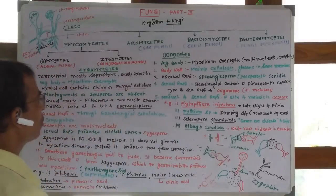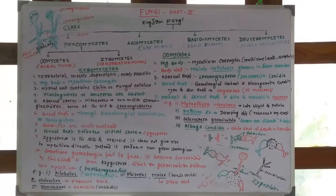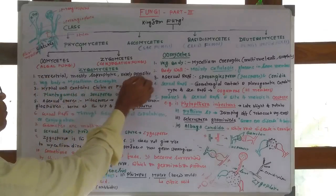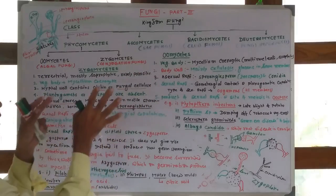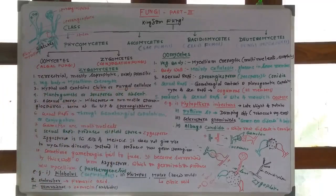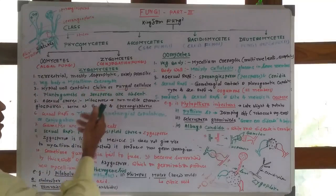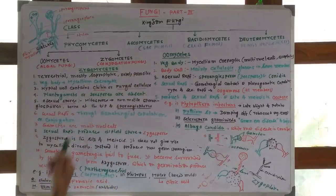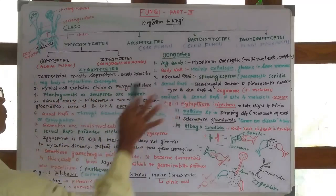Now we discuss Zygomycetes. These are terrestrial, mostly saprophytic, rarely parasitic. Unlike Oomycetes which are aquatic, Zygomycetes are generally terrestrial. The vegetative body is mycelial and coenocytic like Oomycetes.